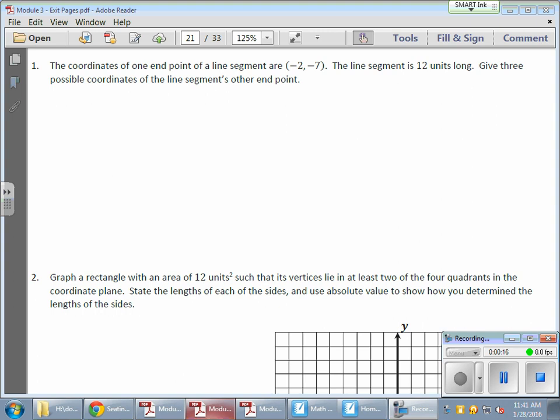For example, let's take a look at this first problem here. We have the coordinates of one endpoint of a line segment are negative 2, negative 7. The line segment just happens to be 12 units long. Give three possible coordinates of the line segment's other endpoint.